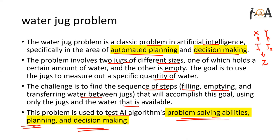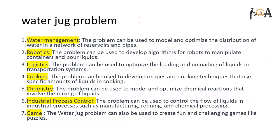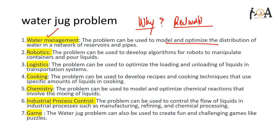Before going to the actual problem, let's understand why we are learning this problem today. What is the industrial aspect of this problem? Where can you use it in the real world? The first real-world application is water management — for optimizing the distribution of water in any particular channel or network of reservoirs. We can also use it in robotics for developing smart algorithms for robots manipulating containers.